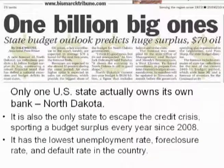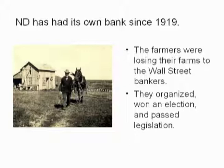We only have one state that actually does this — that's North Dakota, with the Bank of North Dakota. It's also the only state that escaped the credit crisis. It's had a budget surplus every year since 2008 while all other states were struggling or near bankruptcy. It has the lowest unemployment rate in the country, the lowest foreclosure rate, and the lowest default rate on credit card debt. It's had its own bank since 1919, when farmers losing their farms to Wall Street bankers got organized through the non-partisan league — neither left nor right — and pulled off a third-party win by going local.